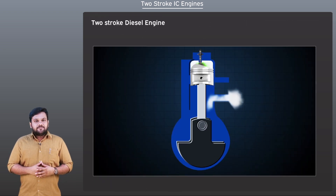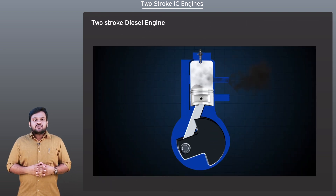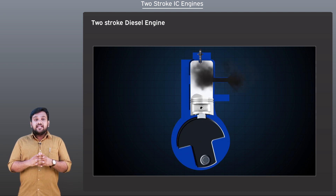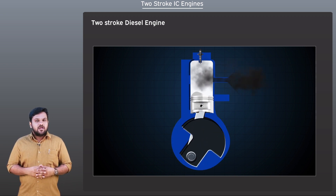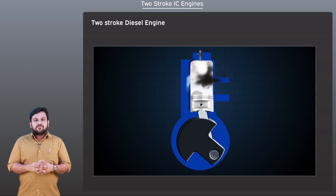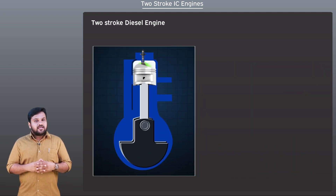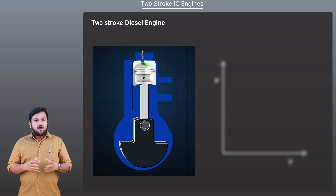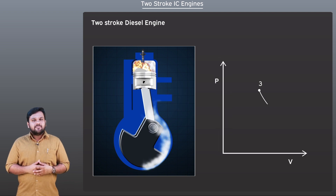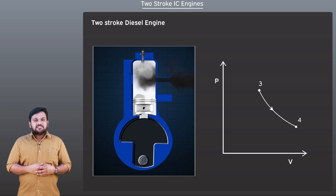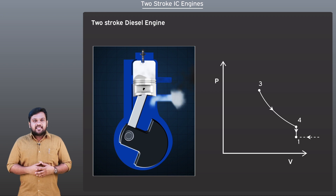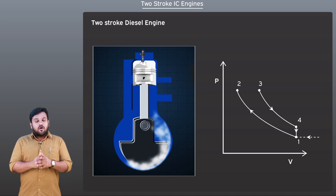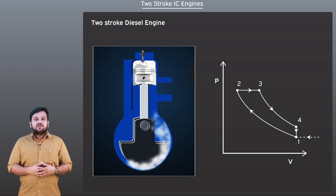In the case of a two-stroke diesel engine, the only difference is that instead of the air-fuel mixture, only air is introduced into the cylinder through the intake port. During the compression stroke, diesel is sprayed into the compressed volume with the help of an injector. All the remaining steps are the same. In almost all two-stroke engines, there will be a deflector at the top of the piston to facilitate easy movement of the air or air-fuel mixture towards the top dead center.